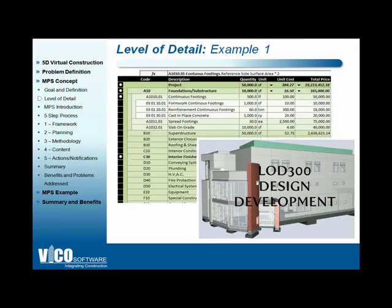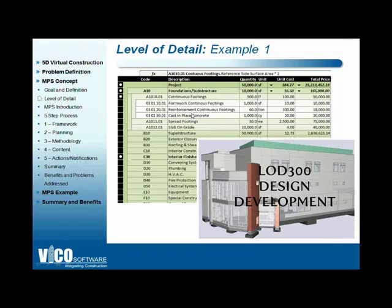We can further increase to level of detail 300, meaning we know the exact sizes and exact placement of the elements, as well as the construction methodology. We know it will be cast in place and that reinforcement needs to be placed on site. This allows us to add cost items for those activities to the elements defined at LOD 200, enriching continuous footings with more detailed information. Completing this action updates the total project cost.